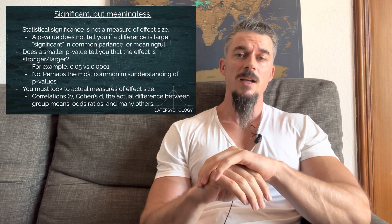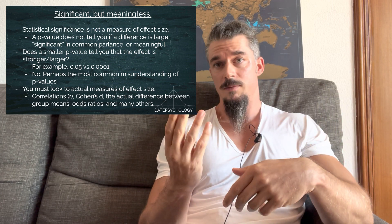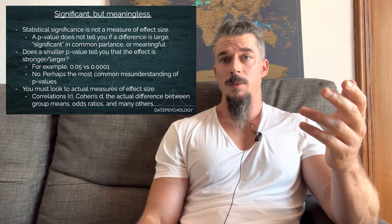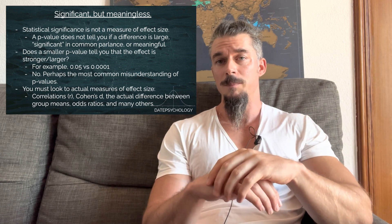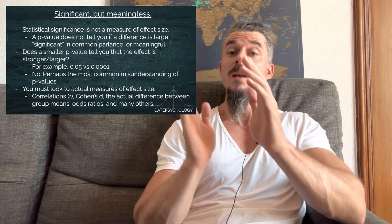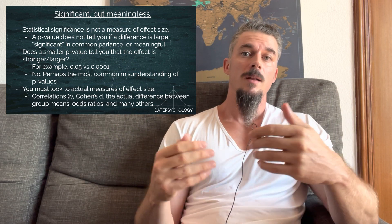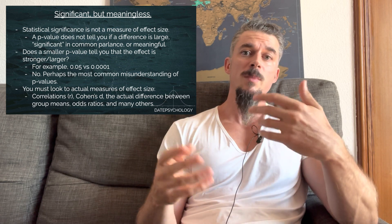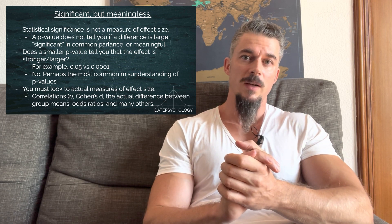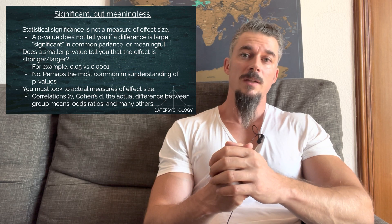Does a smaller p-value tell you that the effect is stronger or larger? No. You have to look at measures of effect size. Correlations are probably the most common — Pearson's correlation, presented as the letter R, will give you a magnitude of the relationship. Cohen's D is a measure of effect size. Even looking at just the actual difference between two means is a measure of effect size, and a standardized difference is more commonly used. Odds ratio and many other effect size measures are used. When you look at a paper, you have to look for some measure of effect size, because statistical significance doesn't tell you that it's meaningful or something that you should care about.